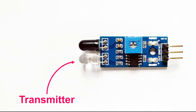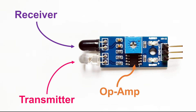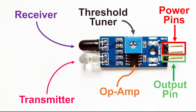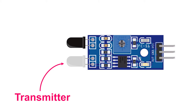These sensors are cheap enough and have a simple build. It has a transmitter, a receiver, an op-amp, a threshold tuner, the input power pins, and the output signal pin. The transmitter is basically an infrared light emitting diode.